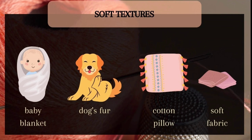You are going to try to find lots of materials with a soft texture. These are examples of materials that have soft textures: a baby blanket, a dog sponge, a cotton pillow, and soft fabric. These objects have a soft texture — if you could touch and feel them, they feel lembut or soft.